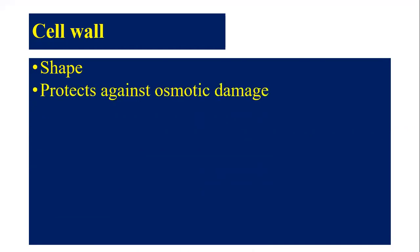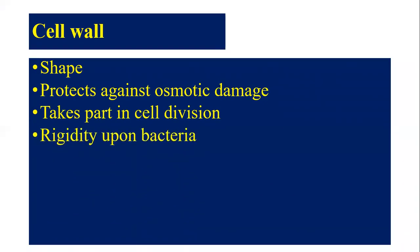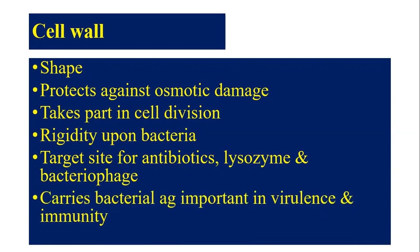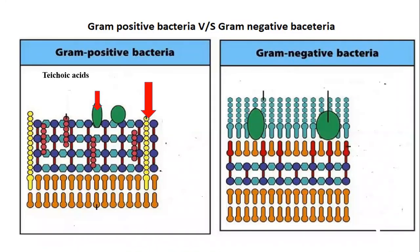The cell wall protects against osmotic damage and takes part in cell division. It provides rigidity to bacteria and acts as a target site for antibiotics, lysozyme, and bacteriophages. The cell wall also carries bacterial antigens, which are important in virulence and immunity.